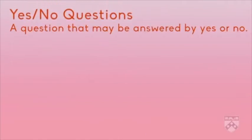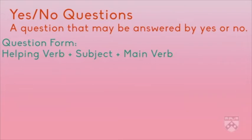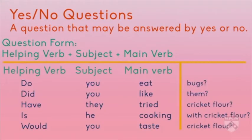Let's start with yes-no questions. A yes-no question is a question that can be answered by yes or no. Yes-no questions are formed by the following subject-verb word order: helping verb plus subject plus main verb. For example, do you eat bugs?